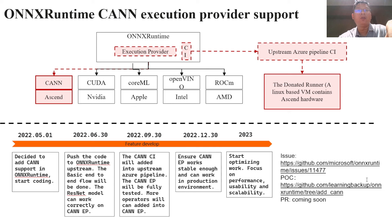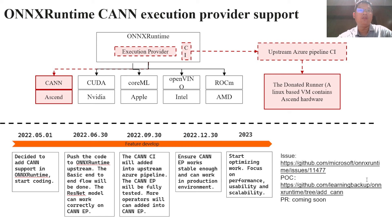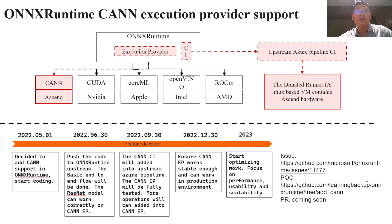Currently, if a user wants to run an ONNX model on Ascend hardware, they must first use the model translation tool provided by CANN to translate the model from ONNX to Ascend format. This flow is a little complex, the translated model may lose some precision, and the performance may be poor. In some cases, the model may not work correctly. To solve this problem, a better way is to find a solution so that ONNX models can work on Ascend directly. So, in ONNX Runtime, we'd like to add CANN as a new execution provider. Once it is done, users can use ONNX models on Ascend hardware via ONNX Runtime directly. We'll also add the related CI as well.